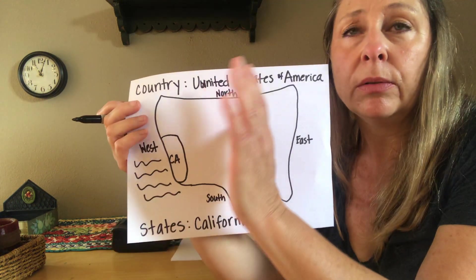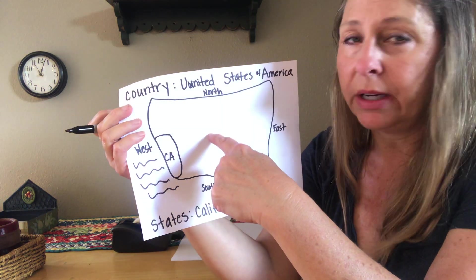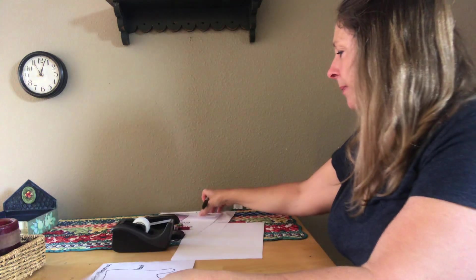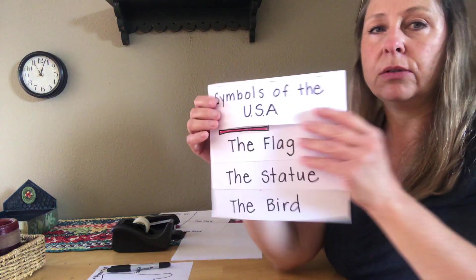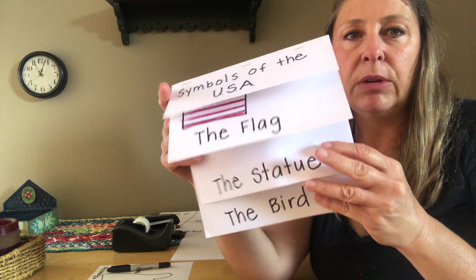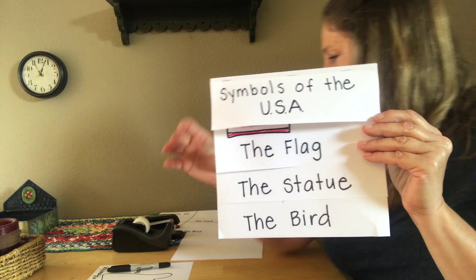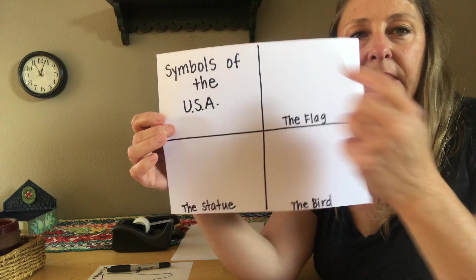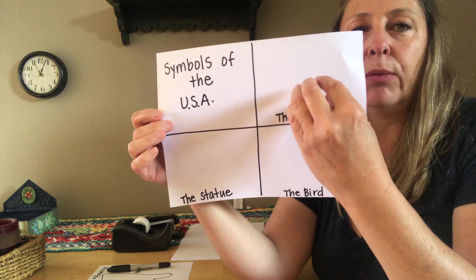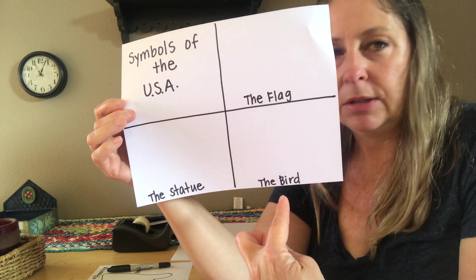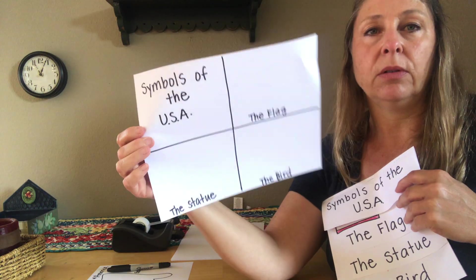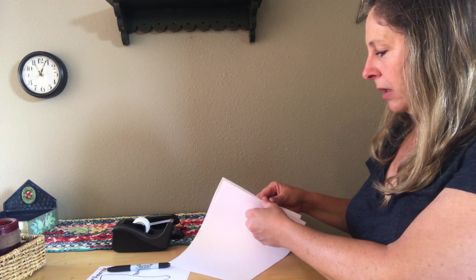Today we're only focusing on our country, the United States of America, and this week we're going to learn three symbols of our country. I'm going to give you a choice of how you want to present your learning. You can either do it in a flip book like we did for Tacky before, or you could just take a rectangular piece of paper and divide it into four boxes. Today we're going to focus on the flag, then tomorrow a special statue, and Thursday a special bird that represents our country.